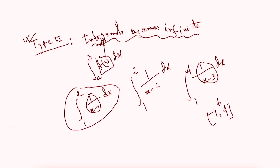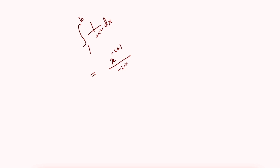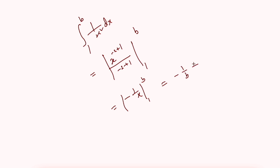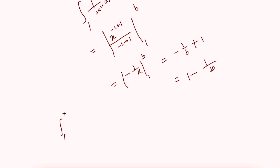How to evaluate this type of integral I will discuss in the next class. But let me now discuss the integral from 1 to b of 1 over x squared dx. This integral will be either proper or improper depending on its upper limit b. Normally we integrate it as follows: the result is minus 1 over x evaluated from 1 to b, which equals minus 1 over b plus 1, which equals 1 minus 1 over b.